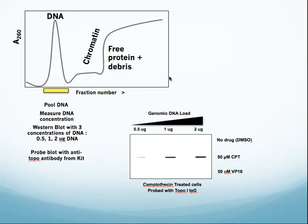A very good way to quantify topo-DNA complexes is to use the following method, which is included in the kit. The DNA is banded in cesium as described, and you simply pool the DNA fraction and measure the DNA concentration. You can use a spectrophotometer or a nanodrop. The DNA concentration is adjusted so that you spot on the blot three different concentrations to ensure linearity of the signals. In this case, you can see we put 0.5, 1, and 2 micrograms of DNA on the blot. This blot was then processed for anti-topo-1 antibody binding that's provided by the kit. Those protocols are also included in the kit.